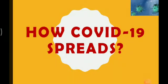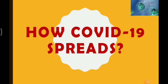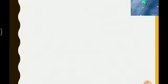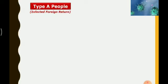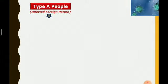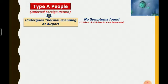Hello all, today let us see how COVID-19 spreads across our community. Basically there are four types of people — let us see them one by one. The first type is Type A. A Type A person is someone who returns from a foreign country to India. Once they return and reach the Indian airport, they will undergo thermal scanning.